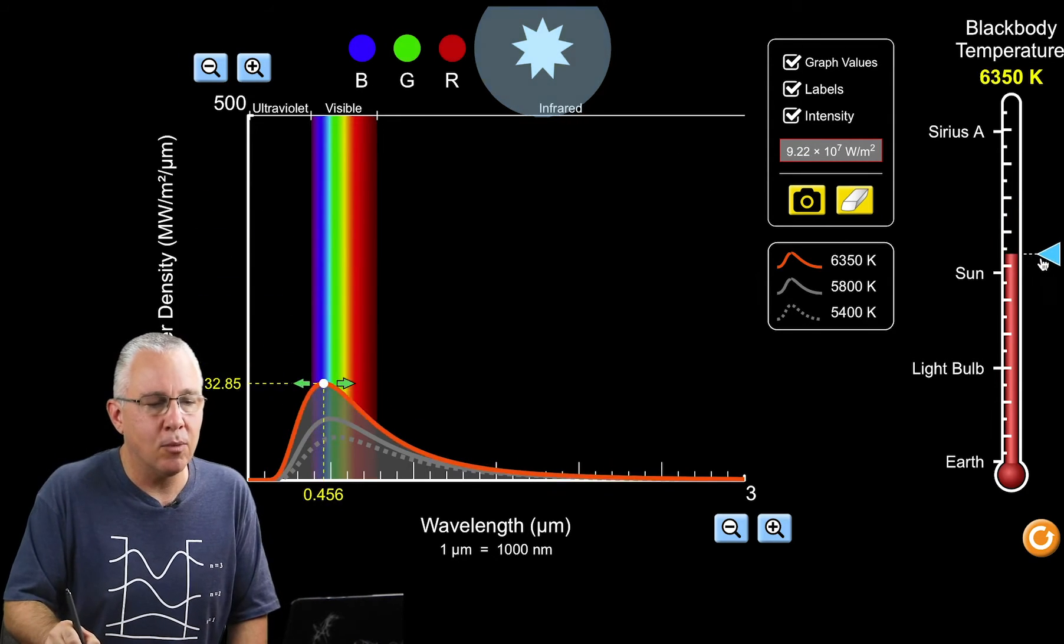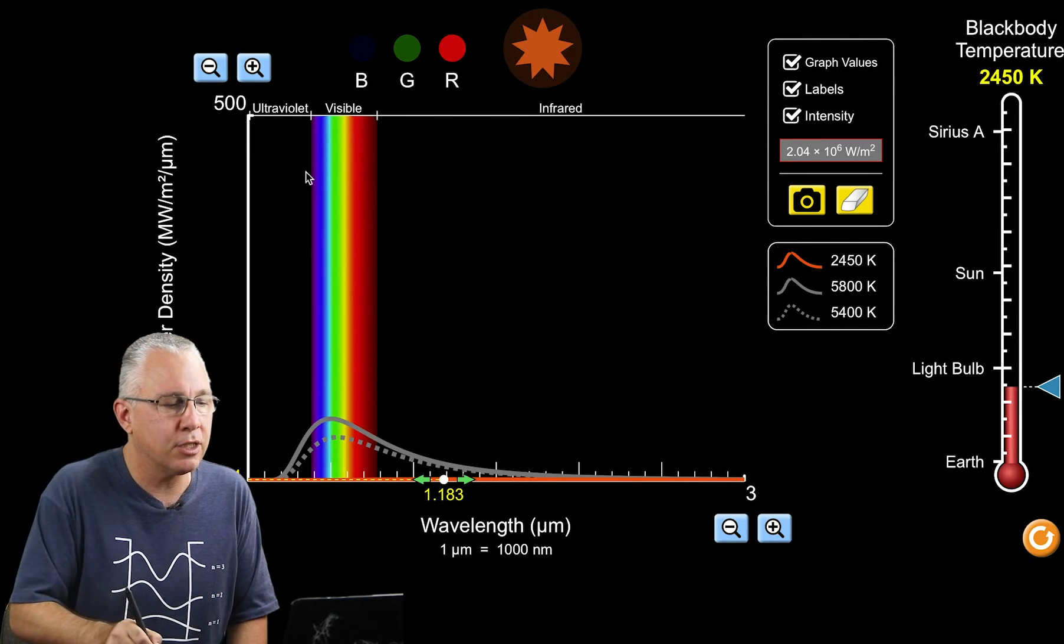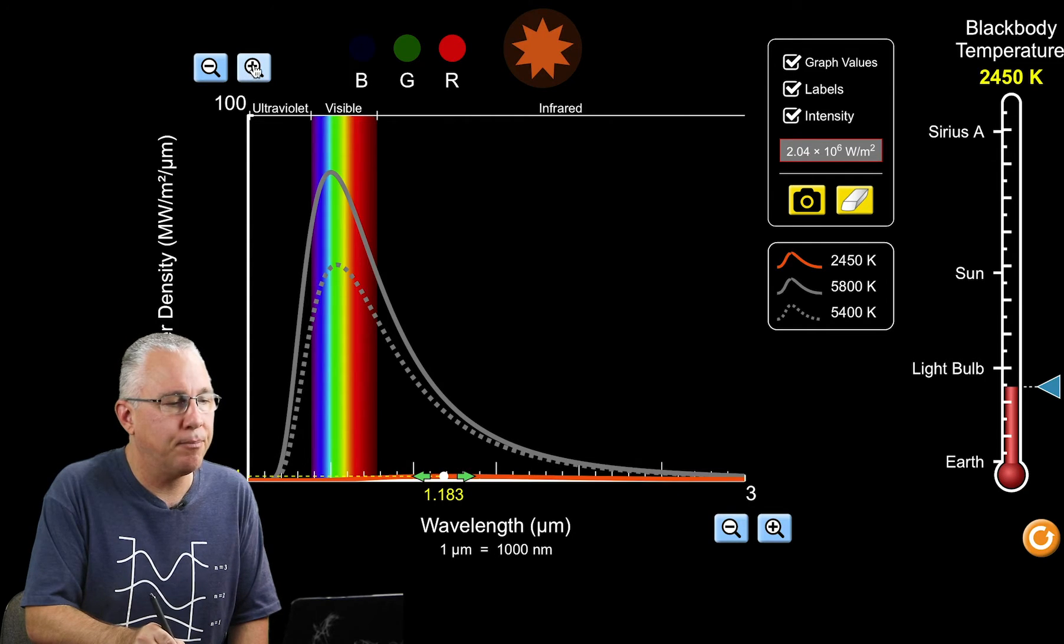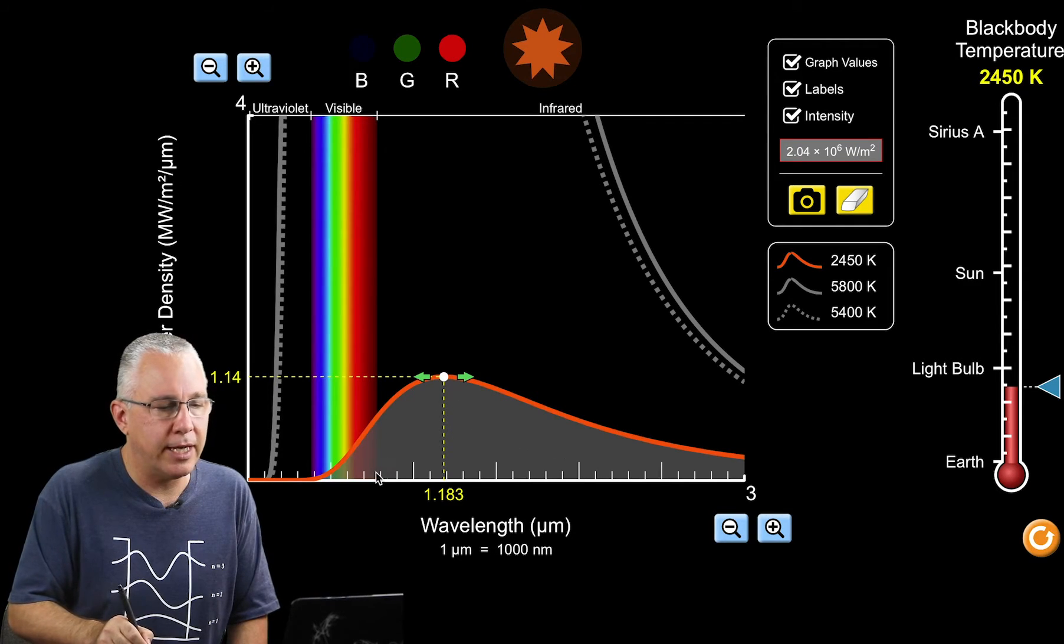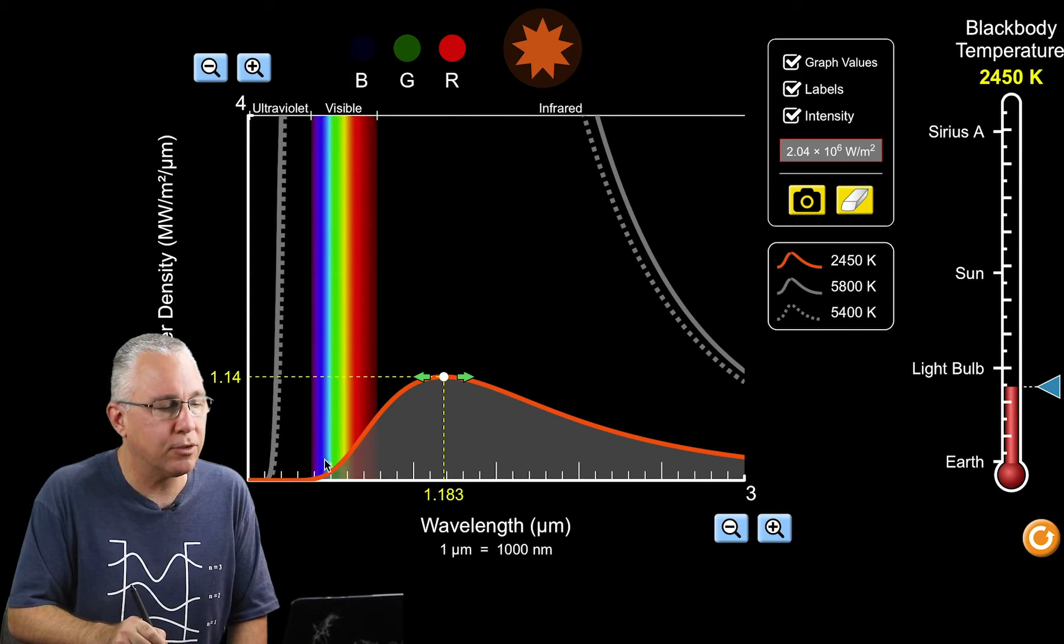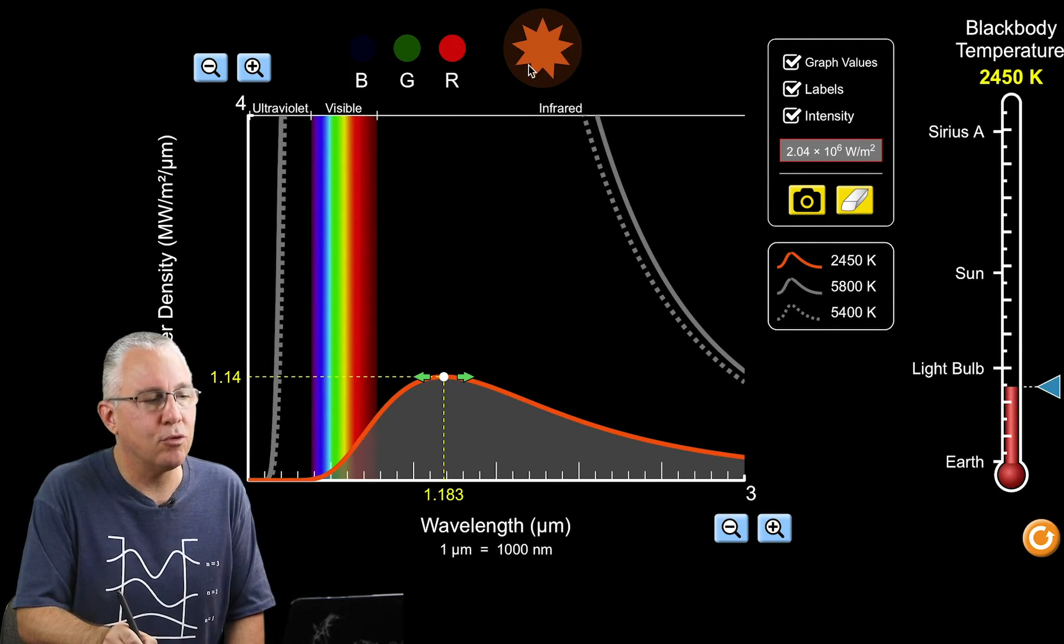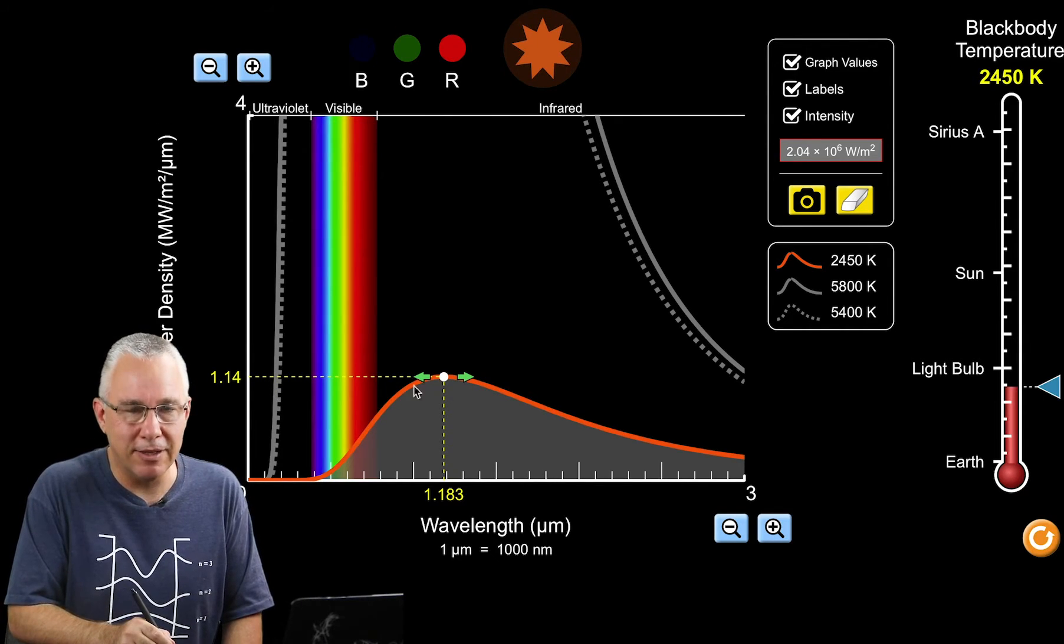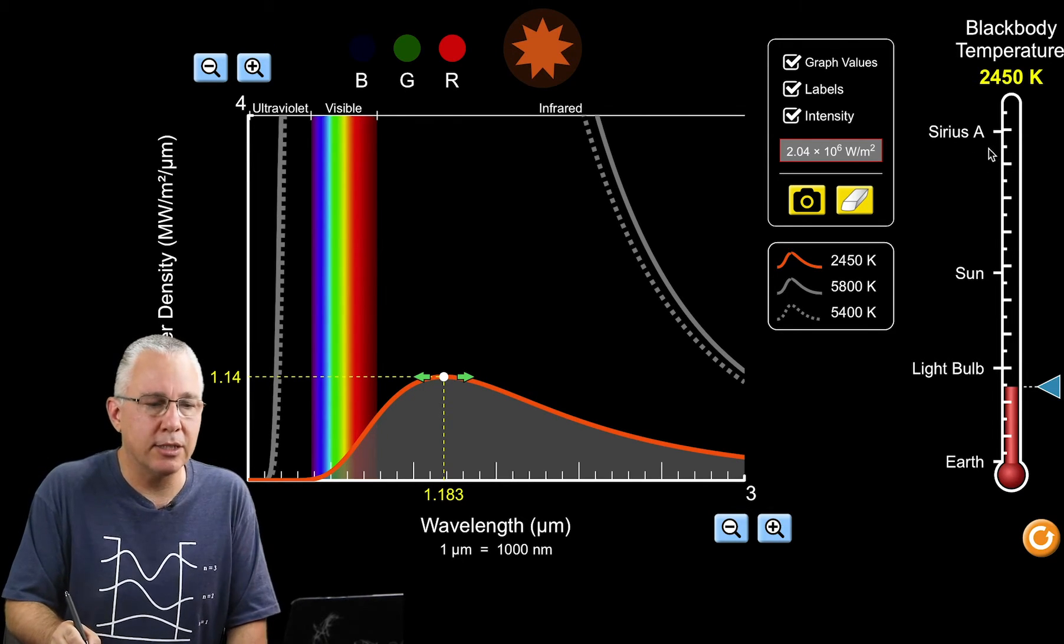If I go to the other extreme, a red dwarf with a temperature of maybe around 3000 Kelvin, my scale is way out so I'm going to change that. You can see we have lots of infrared radiation and, in the visible, the red end of the spectrum but very little in the blue end. The star appears a reddish color, so we refer to this as a red dwarf. The total intensity is significantly lower than the sun and even more significantly lower than hot blue stars such as Sirius.